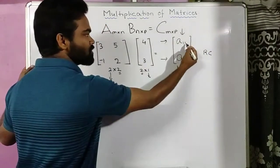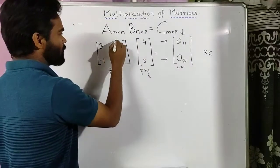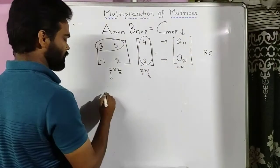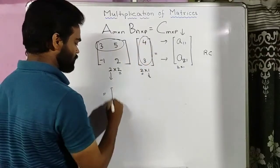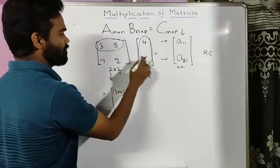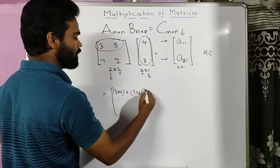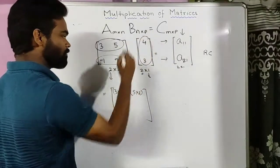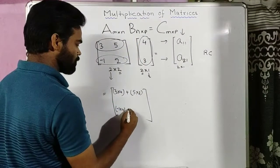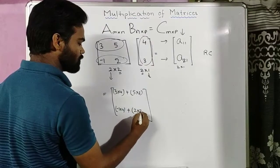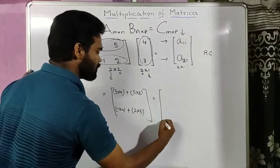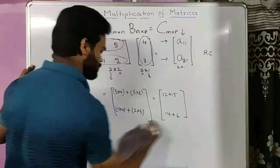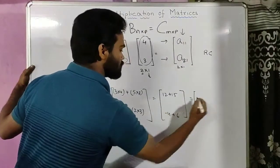The notation r and c denotes row and column respectively. To get element a₁₁, the first row is multiplied by the first column: 3×4 plus 5×3. For a₂₁, the second row is multiplied by the first column: -1×4 plus 2×3. So the resultant matrix is: 12+15 = 27, and -4+6 = 2.